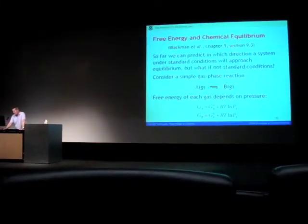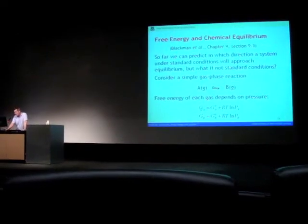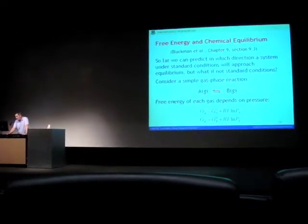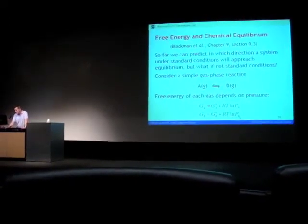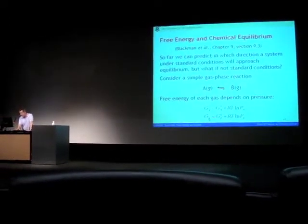So we'll take this very simple case. Here's the free energy for species A: GA is GA0 plus RT log PA. GB is GB0 plus RT log PB. This is the equation we saw on the last slide.